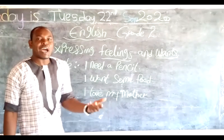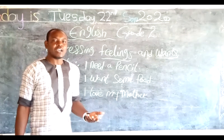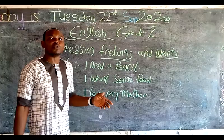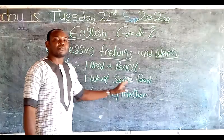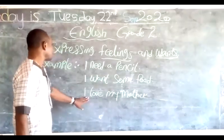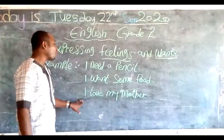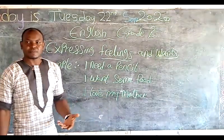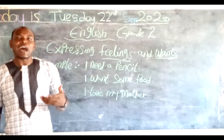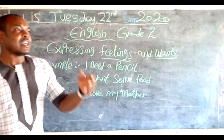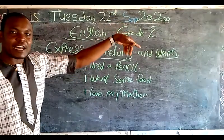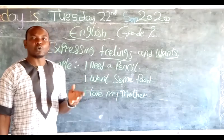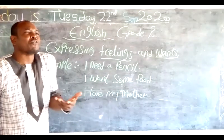Number two: 'I want some food.' Still talking about want — something you need. Now let's look at this last example: 'I love my mother.' Here we are talking about feelings. Also, 'I like that car' — all of this is talking about feelings, something you love or admire so much.